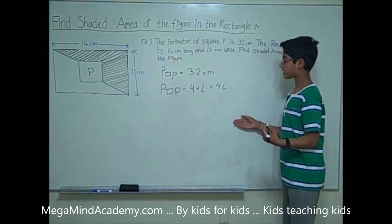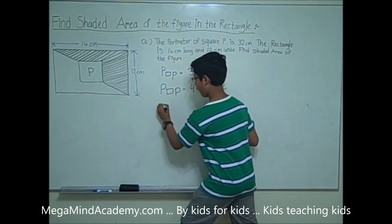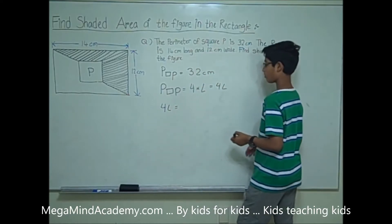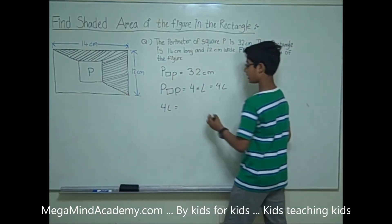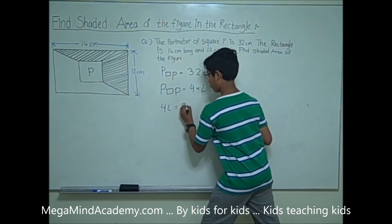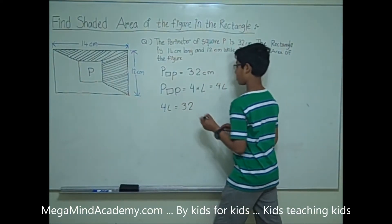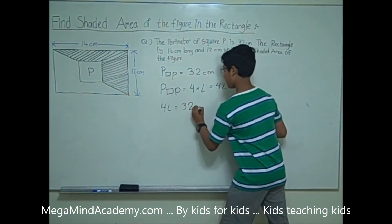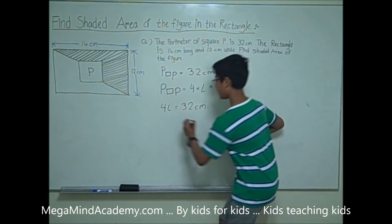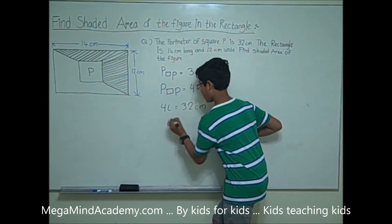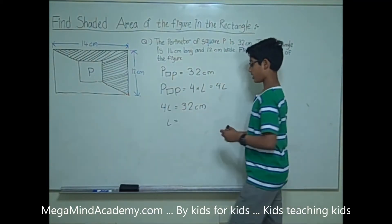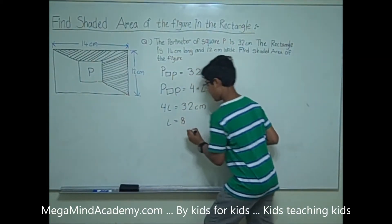This means that 4L is equal to 32 cm. So L is equal to 32 cm divided by 4, which is 8 cm.